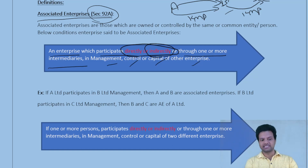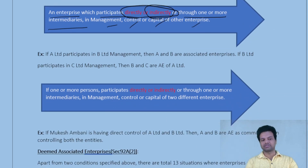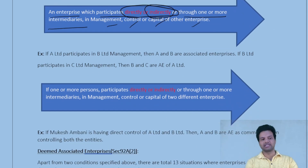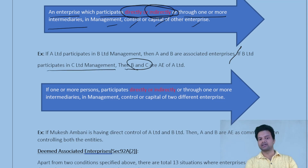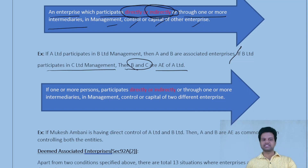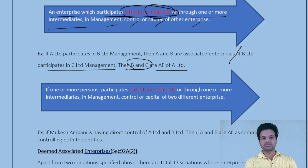To summarize: if A Limited participates in B Limited's management, then A and B are associated — that is a direct association. If B Limited participates in C Limited's management, then B and C are associated enterprises of A Limited. This first point talks about enterprises.